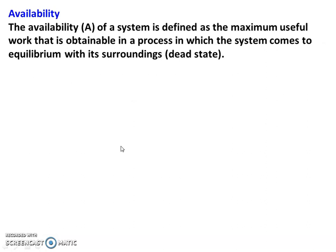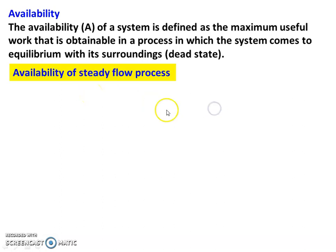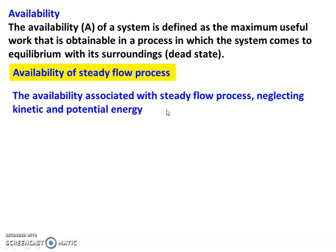Availability of a system is defined as the maximum useful work that is obtainable in a process in which the system comes to equilibrium with the surrounding, or the dead state. When a system reaches equilibrium with its surrounding, it will produce the maximum work. There are two types of processes: open system (steady flow process) and closed system (non-flow process).